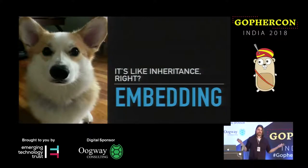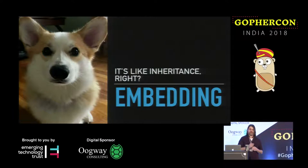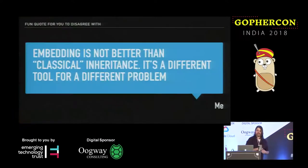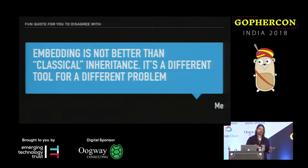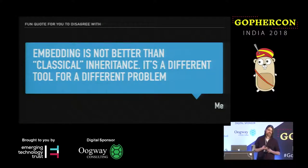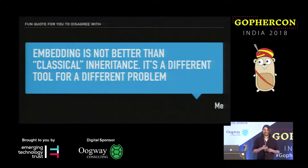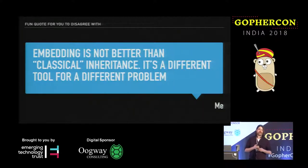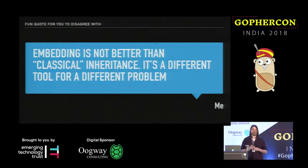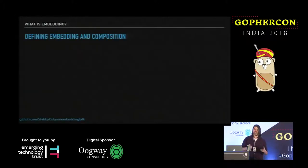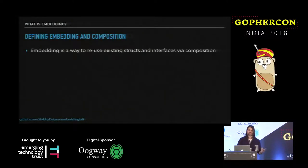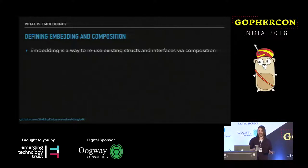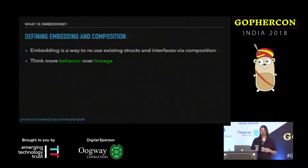So, embedding — it's like inheritance, right? Well, not really. Embedding is not really better than classical inheritance. It's a different tool for a different problem — that's a quote I made up that you're free to disagree with, and if you want to disagree you can blow me up on Twitter. So let's define what we're talking about: embedding is a way to reuse existing structs or interfaces via composition, and when you do this you should usually think more about behavior and less about lineage.